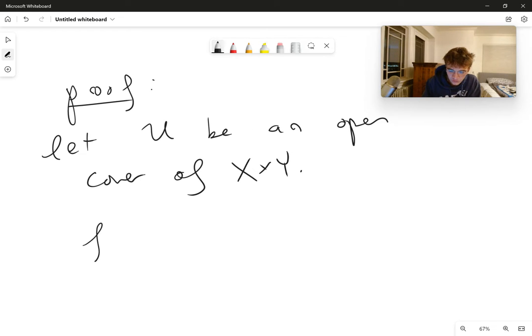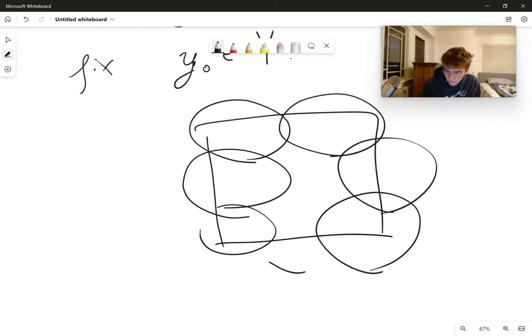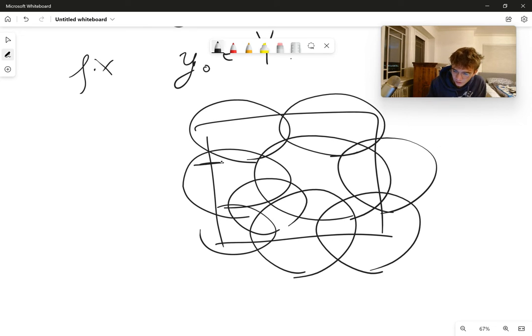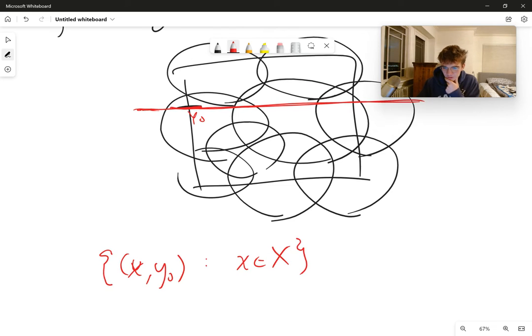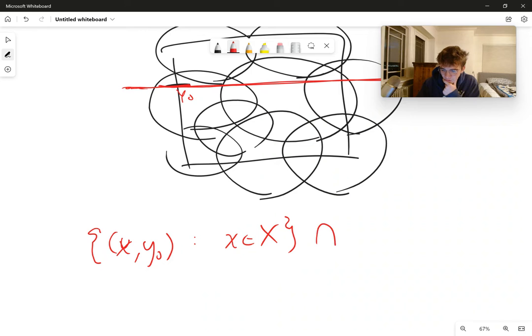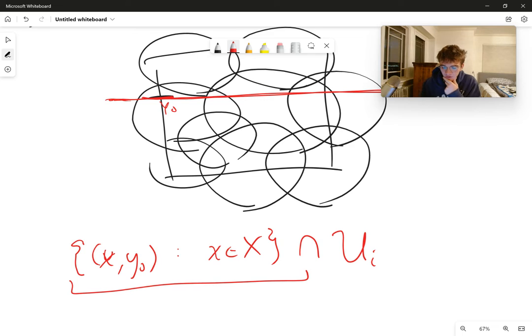So if we fix a Y0 within Y. So let me just draw a picture here. Here I have a box and I have some cover. And now I'm going to fix a Y0 here. And I'm just going to look at this line. And I'm going to look at the set of all points X comma Y0, so that X is within X. And so this set, if I intersect this set with my family of open sets here, this set also has to be covered. And based on the product topology, the intersection of every set in the open cover has to be open in this X, Y0.